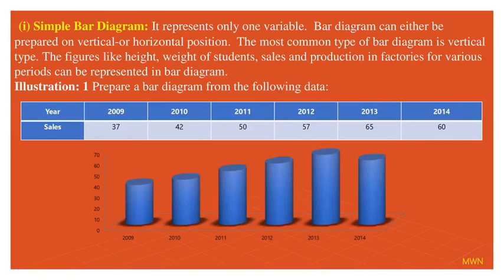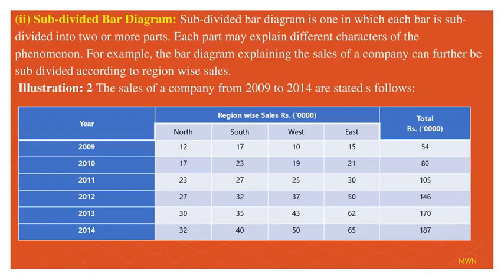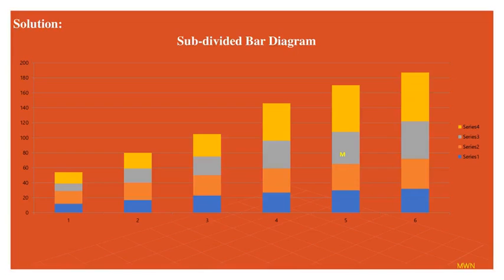Subdivided bar diagram means each bar is subdivided with different segments. Here's one example: sales in North, South, West, and East are taken into consideration and represented in the bar diagram. Different colors for each area have been used, so you can find which one is growing high and which one has a low growth rate. It gives a clear idea.